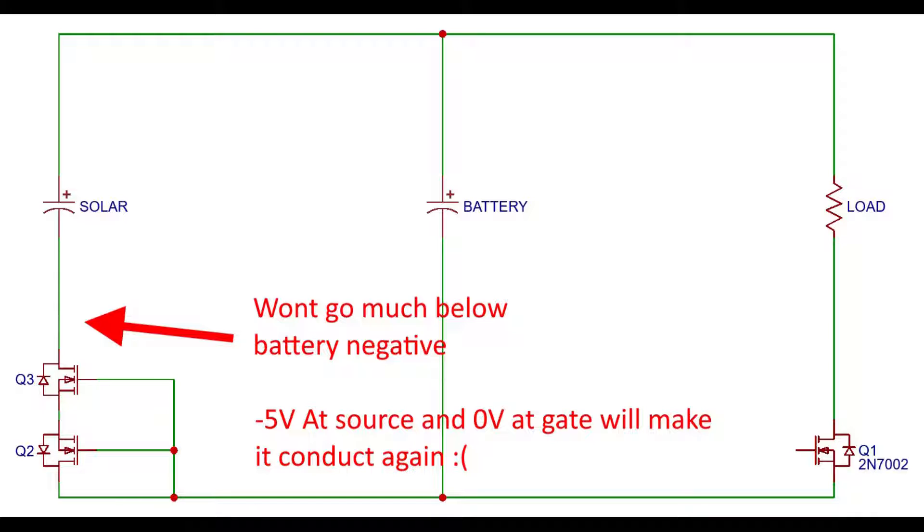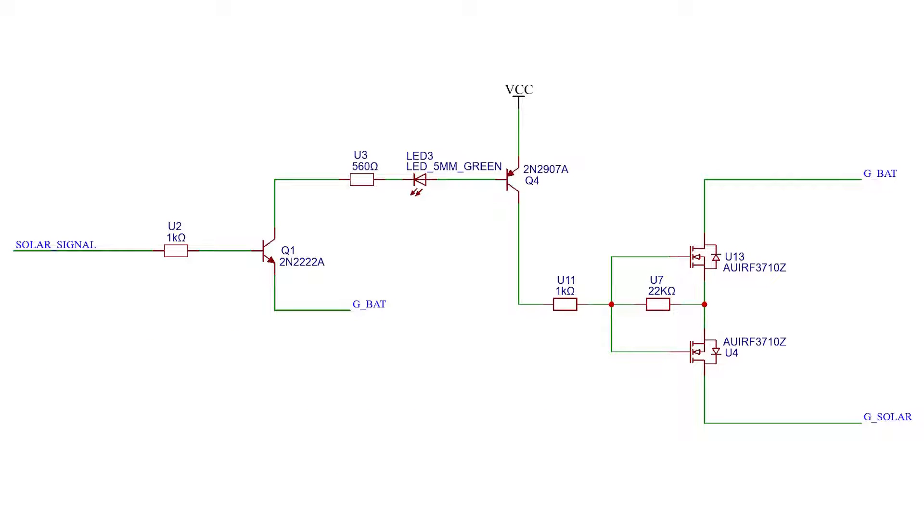Third, when we put zero volts at the gate, the source will not go any lower than minus 5-ish volts, leaving the MOSFET partially open. And that is no good. So let me walk you backwards through the schematic.